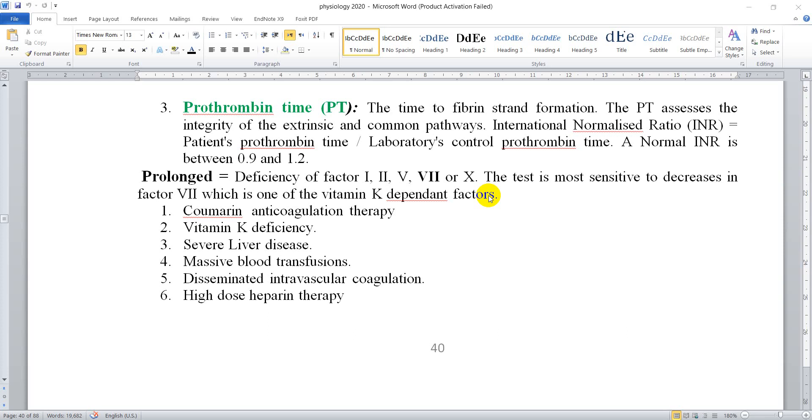As-salamu alaykum. In the final part of this test, we reached Prothrombin time, the third test to evaluate coagulation activity. Prothrombin time, or PT, is the time to fibrin strand formation.